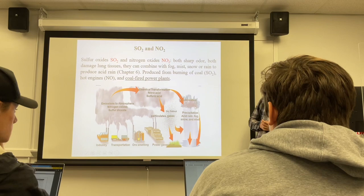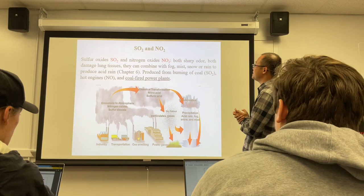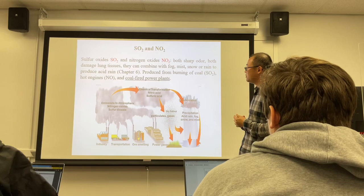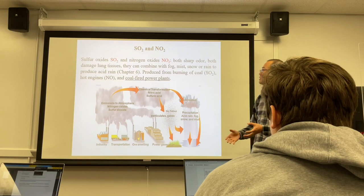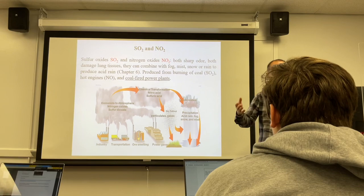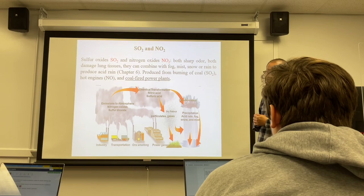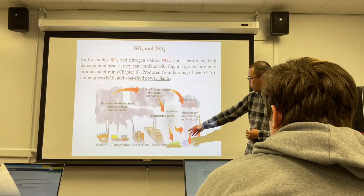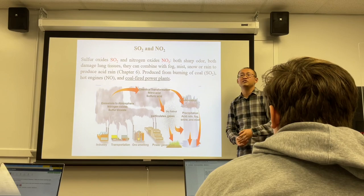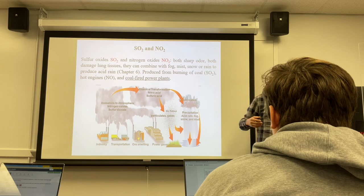Next are sulfur and nitrogen oxides. They are both oxides of sulfur and nitrogen, and both have a sharp, unpleasant odor. They both have damaging effects on lung tissues. What makes it worse is these two gases can combine with fog, mist, and rain to produce acid rain, acid fog, or haze. They come mainly from industry: smelting, power generation, and transportation. We will study acid rain in Chapter 6.